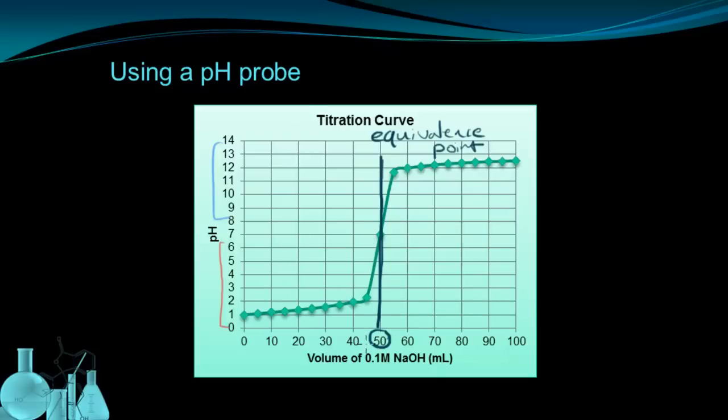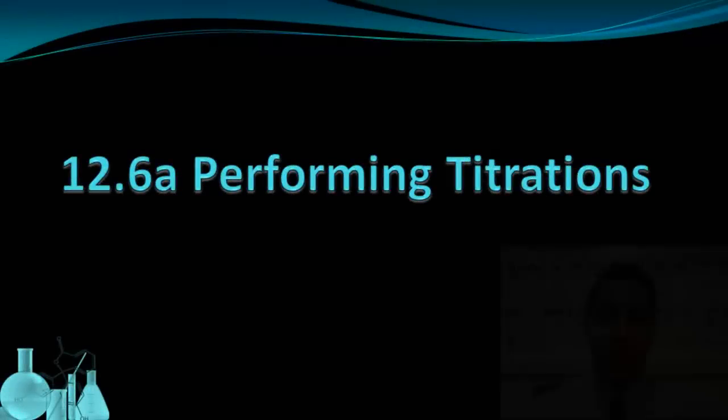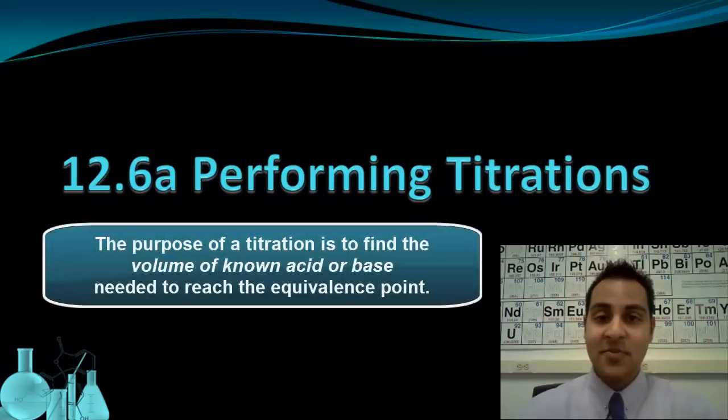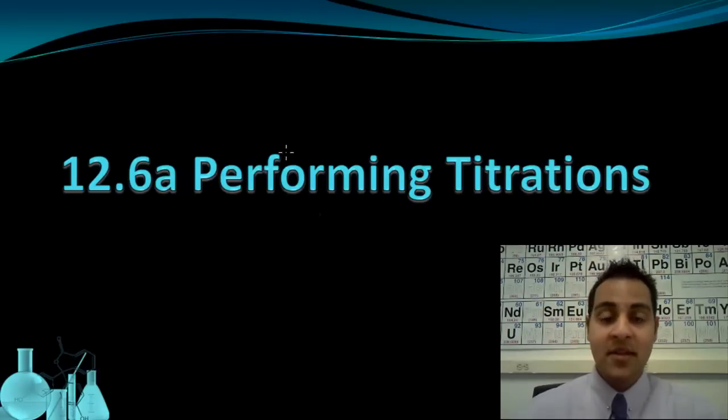And in the next video, we're going to see how to use this volume information that we've gathered from either the pH probe or from using the indicator. Remember that the key piece of information from a titration is the volume of the known acid or base that's added. So in our example today, that was a sodium hydroxide. You're either using the endpoint of an indicator or the titration curve from a pH probe to figure out the equivalence point. And more importantly, the volume added to reach that equivalence point. So that wraps up our lesson on performing titrations. Write down any questions you have in your notes and bring them with you to class.